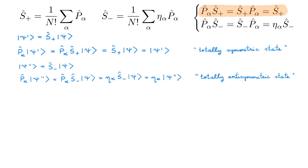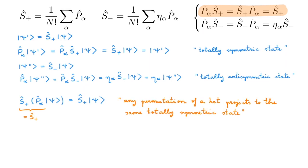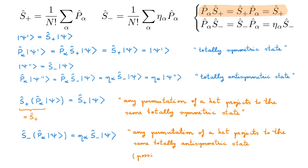Overall, the symmetrizer and antisymmetrizer are the operators that allow us, starting from arbitrary states, to build totally symmetric and totally antisymmetric states. Another important property is that the symmetrizer acting on any permutation of ket psi gives the same totally symmetric ket. This follows from using P-alpha times S-plus equals S-plus. Similarly, for the antisymmetrizer acting on a permutation of psi, any permutation of a ket projects to the same totally antisymmetric state, possibly up to a sign.